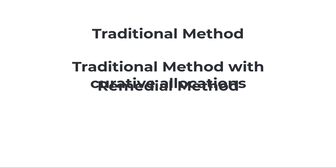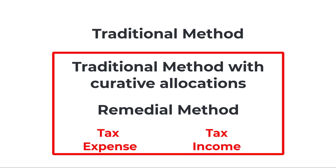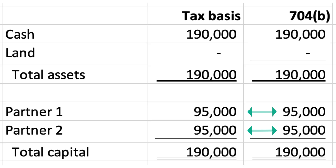The first alternative is called the traditional method with curative allocations. The second is called the remedial method. The end effect of both methods — or a reasonable variation — is that one or more partners will be allocated tax income and one or more partners will be allocated tax expenses. The 704B economic balance sheet does not change; these are strictly tax allocations with no economic effect. In our example, under either method, Partner 1 would end up with $5,000 of tax expenses and Partner 2 would end up with $5,000 of tax income, making the tax capital accounts equal to the fair market value capital accounts. Although this example shows how built-in gains are treated, built-in losses follow the same approach.